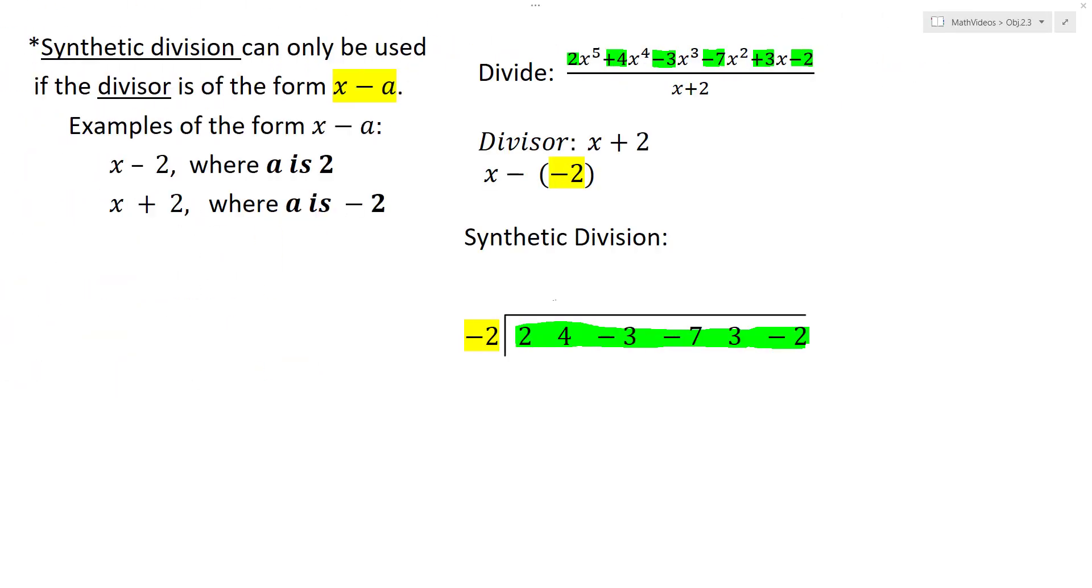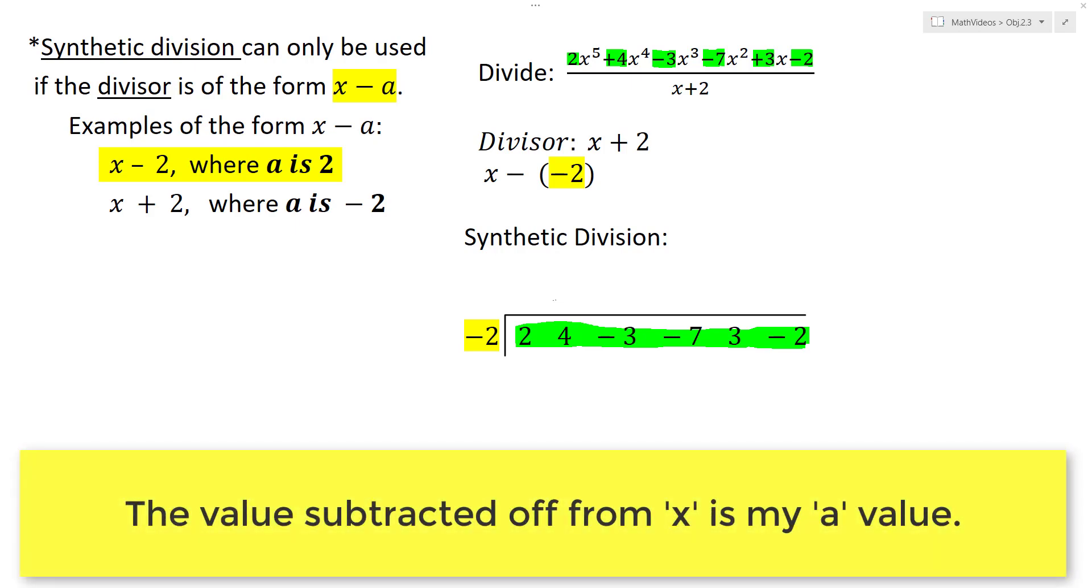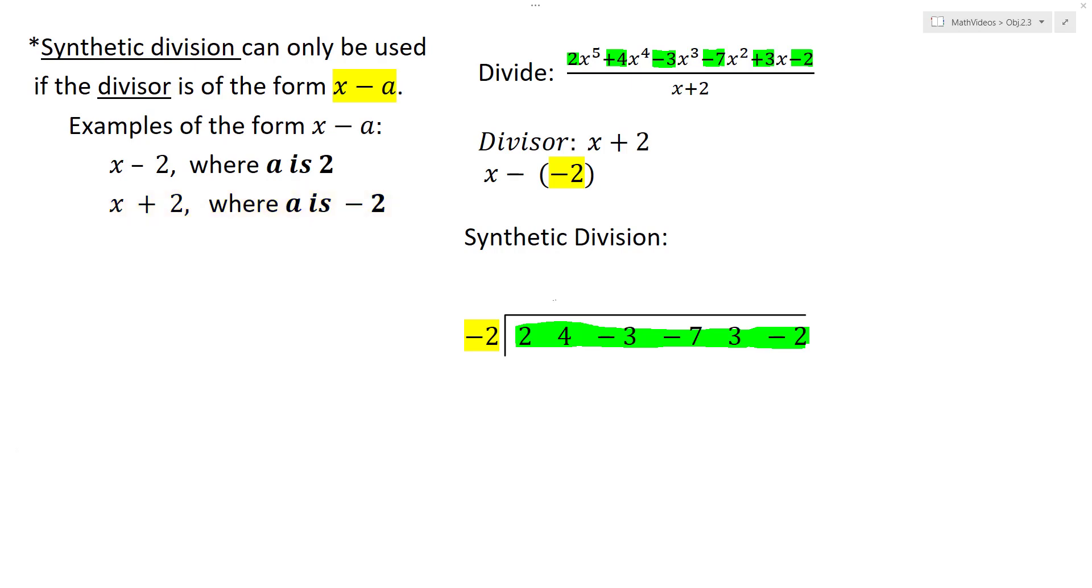As we mentioned before, synthetic division can only be used if the divisor is of the form x minus a. So some examples of what that means: let's say you're given the divisor x minus 2. In that case, who's being subtracted off? 2. So a is 2. In the case x plus 2 as the divisor, who's being subtracted off? Negative 2. So a is negative 2. I always tell students you can look at it as what value is subtracted off or you can look at it as the opposite of what you see. But you have to be in that form, x minus a.